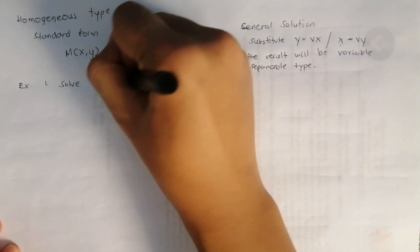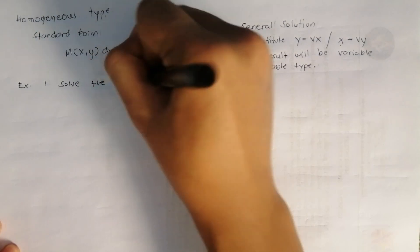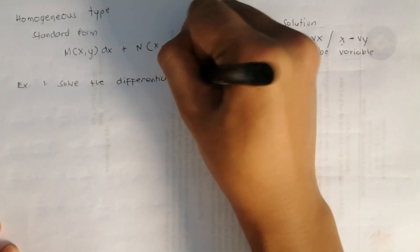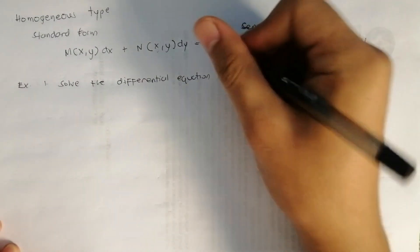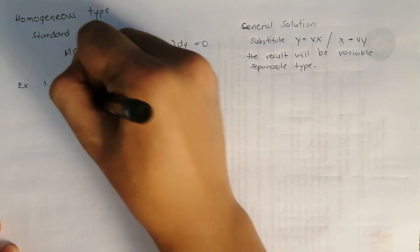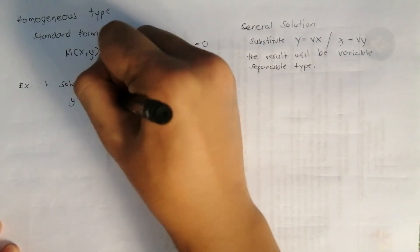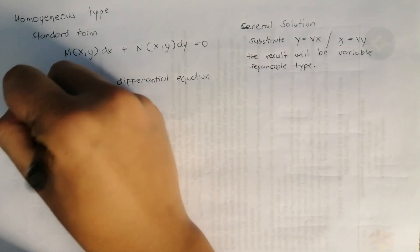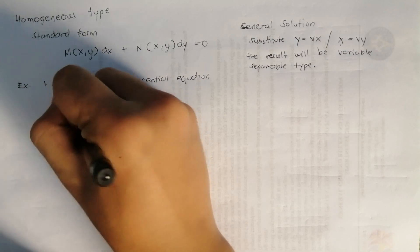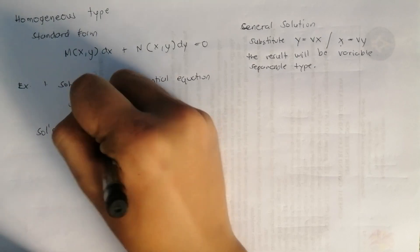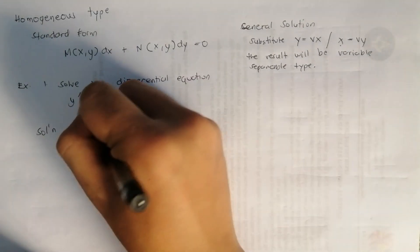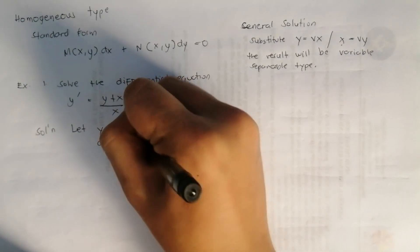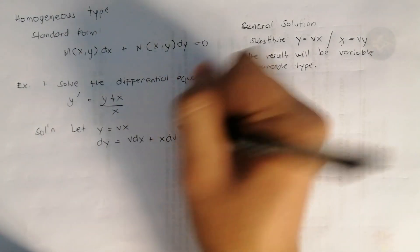So for example number one: solve the differential equation y prime equals (y plus x) over x. For the solution, we let y equals vx, so the derivative of y is v dx plus x dv.